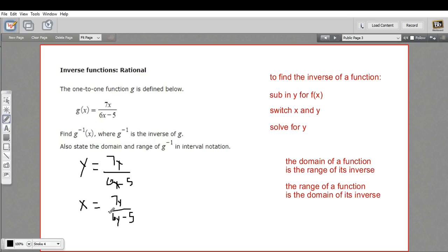And then finally, we have to solve for y. That's a little bit tricky in this one. We've got y on the top and the bottom of a fraction. I think I'm going to multiply both sides by the denominator here so that it'll cancel. We'll get 6y minus 5 here. And then I'm going to distribute this x. So this would be 6xy minus 5x equals 7y.